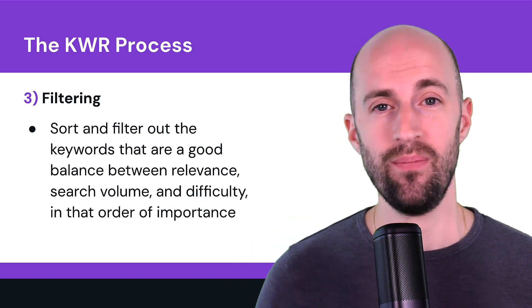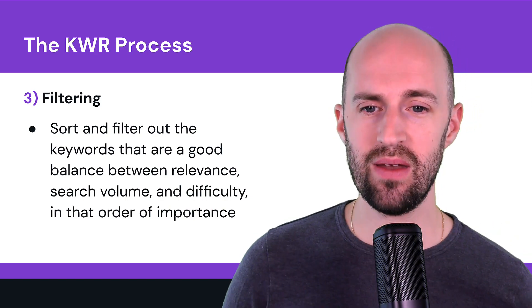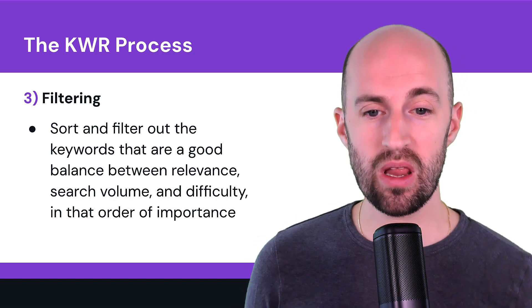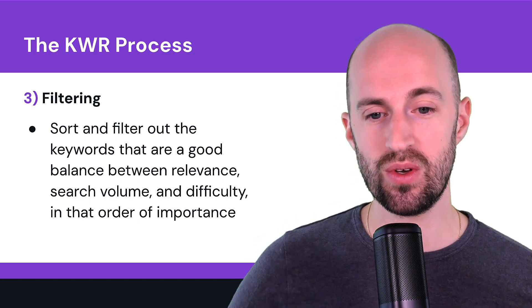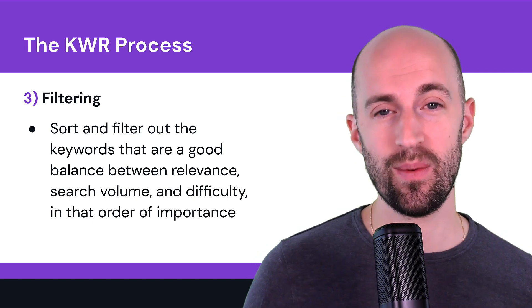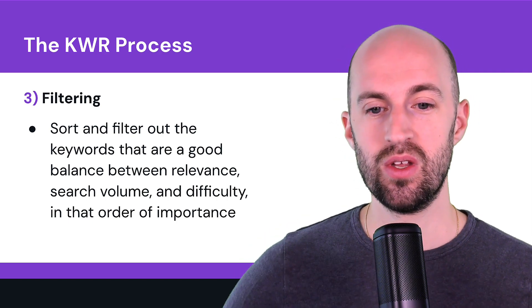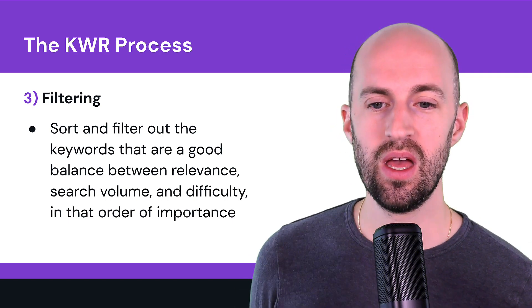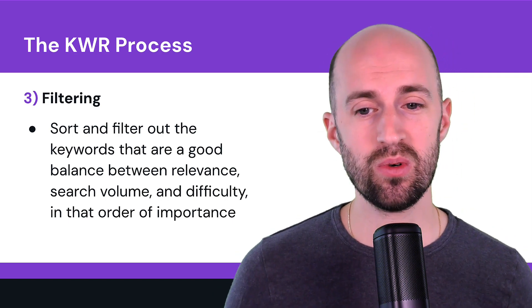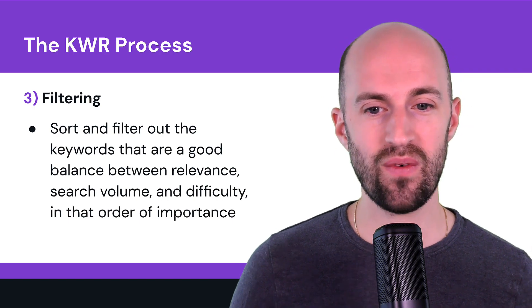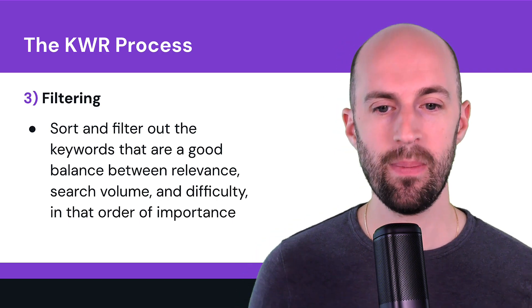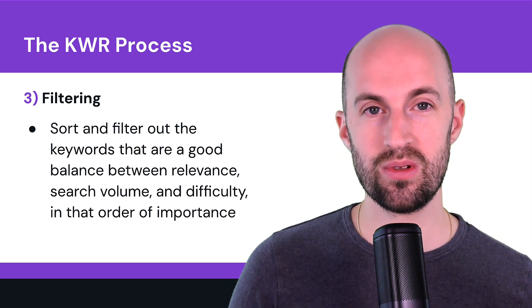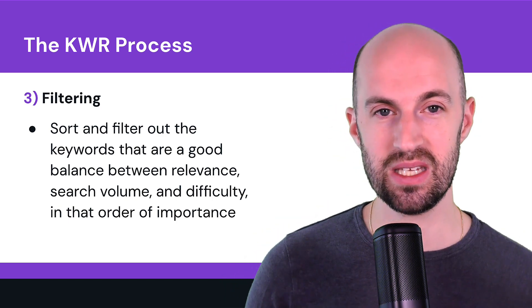Step three is filtering. Go through and filter out keywords that have a good balance between relevance, search volume, and difficulty score — in that order of importance. You want keywords highly relevant to your topics, products, or services; as high a search volume as possible without sacrificing relevance; and the lowest possible difficulty scores so you can easily rank for them.